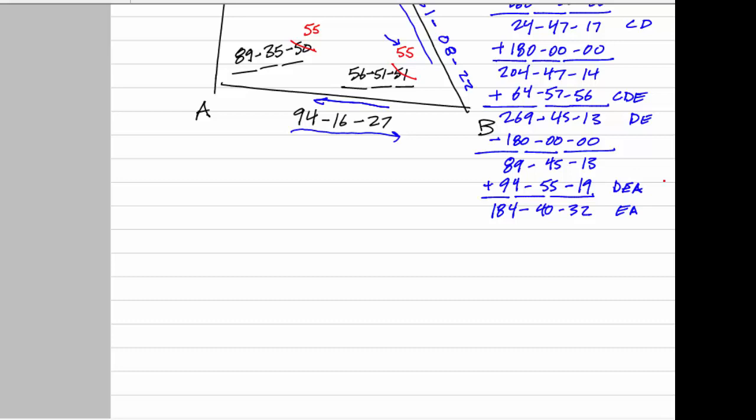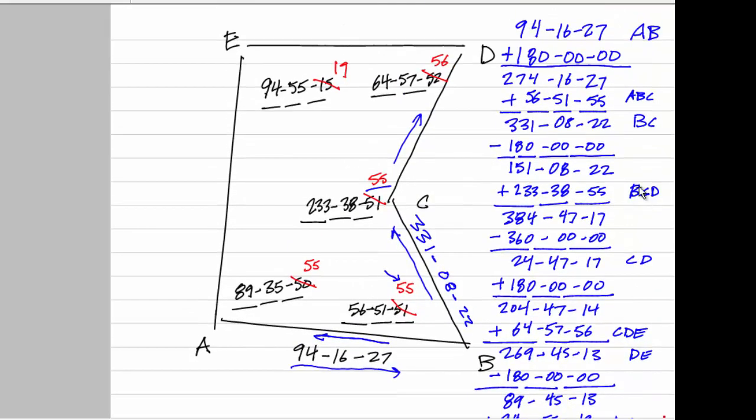Now here's where we stand. Let me put all of this summarized up here for you. We have azimuth CD was 24, 47, 17. And then DE was 269, 45, 13. And then EA was 184, 40, 32. Well, I've got all five sides now, but is there any chance I've made a computation error? Sure there is.